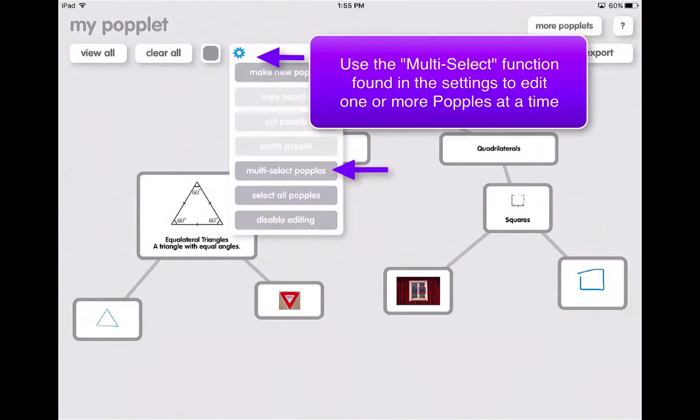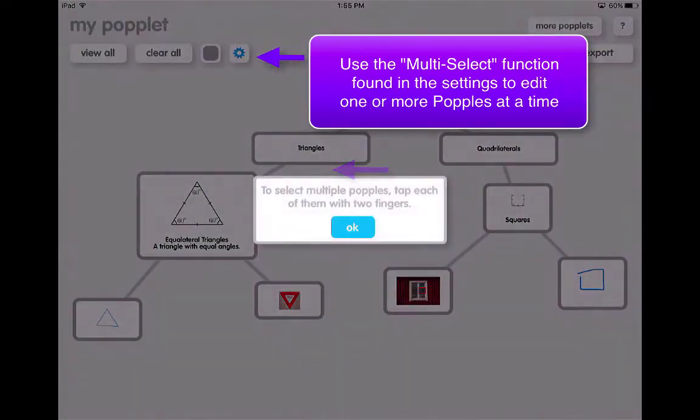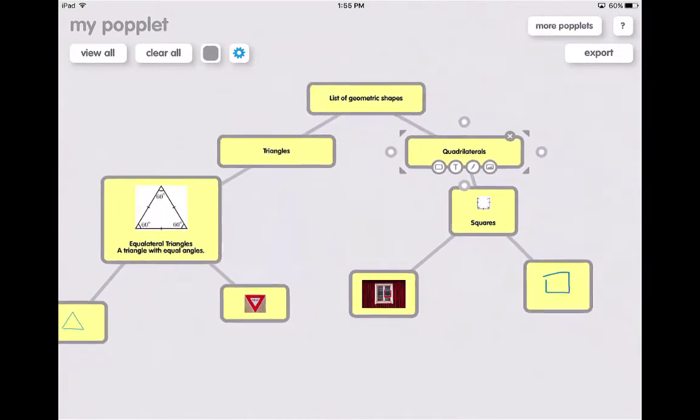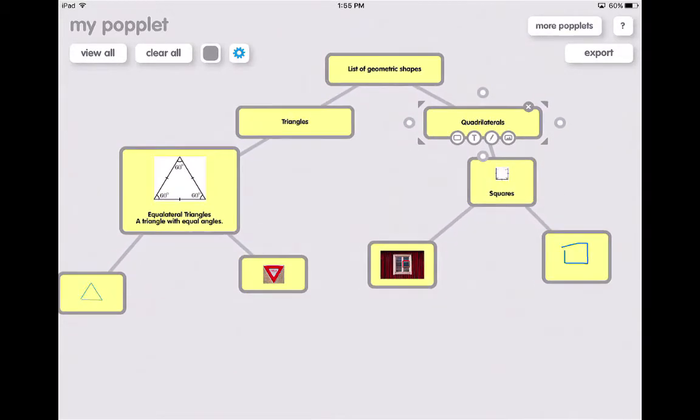If you click the gear, you can then multi-select popples. You'll tap each of them with two fingers. And the purpose of this is so that you can move all of them at once. And that can be a good tip and tool to use when you're moving. If you create multiple poplets, you then can move these around in different areas.